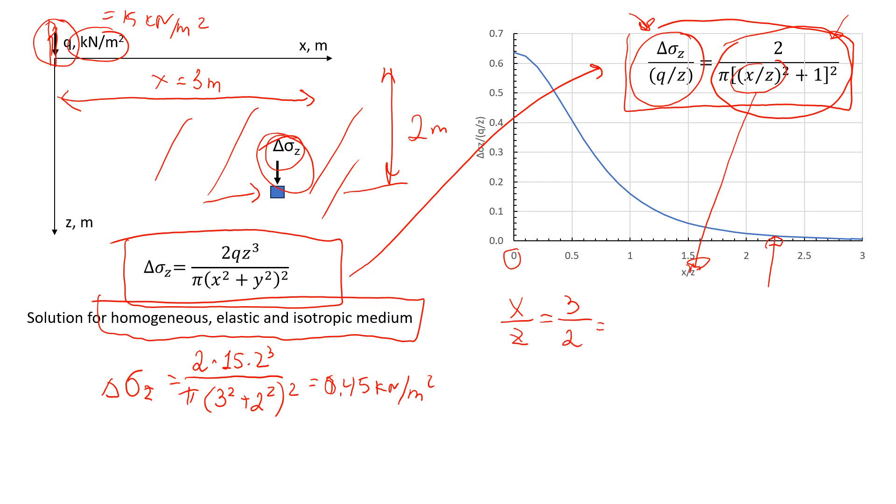We find where we have 1.5 on the graph, and it correlates to a value of 0.06.